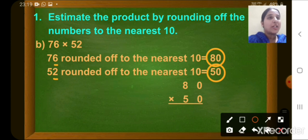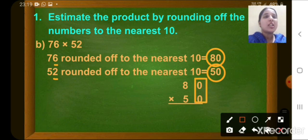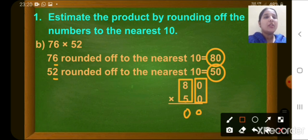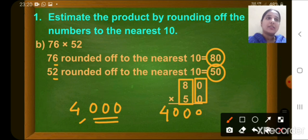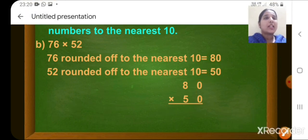Now we will find the product. We will multiply the rounded off numbers. You can see 2 zeros here. First we will write these 2 zeros, then we will multiply the remaining digits. What are the remaining digits? 8 and 5. 8 fives are 40. So the estimated product here is 4000. That is our answer.